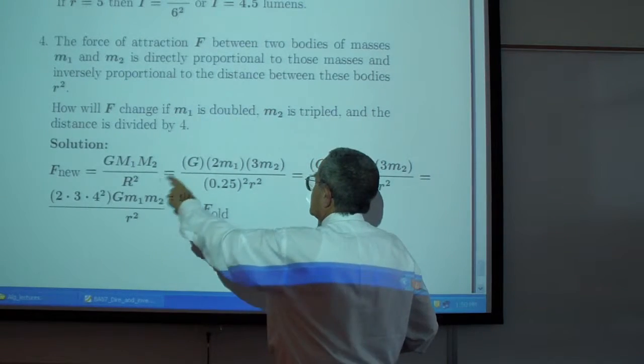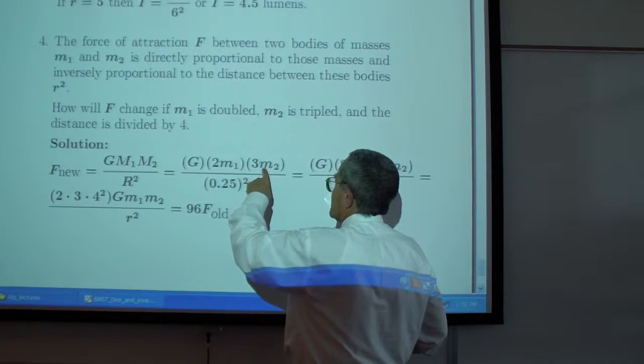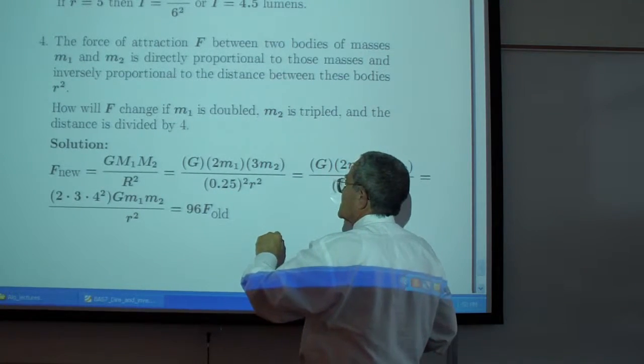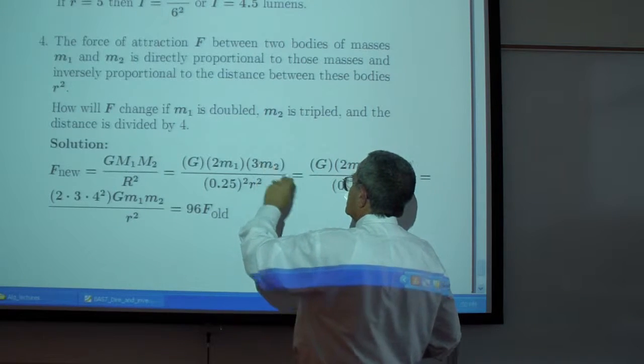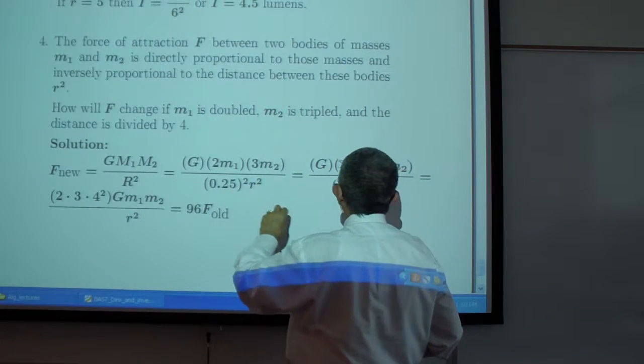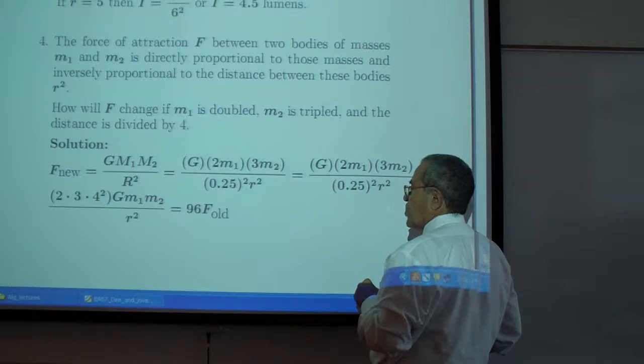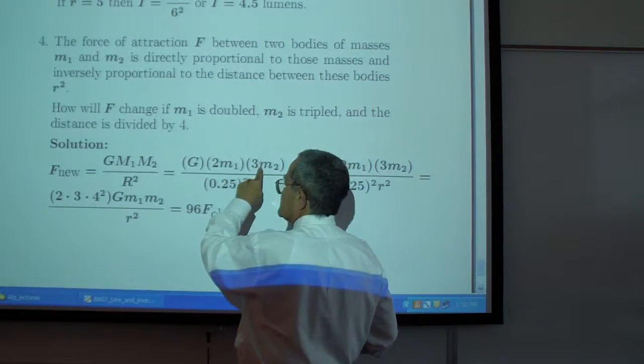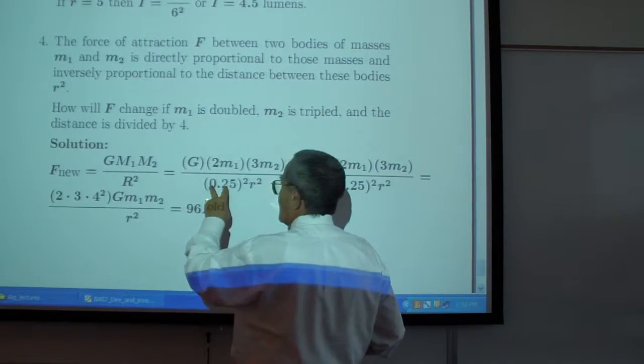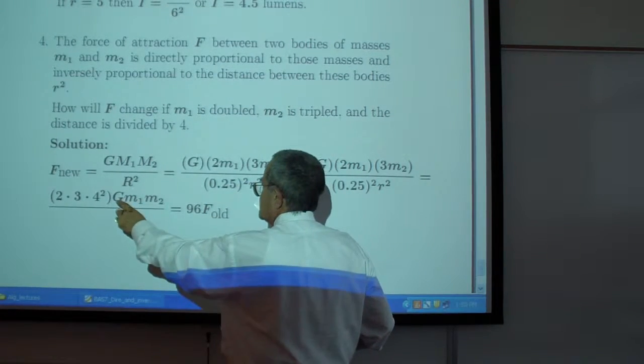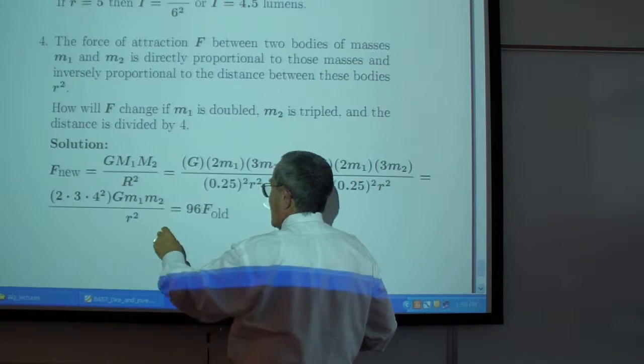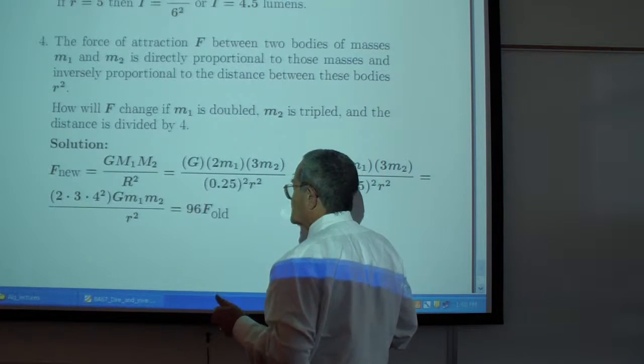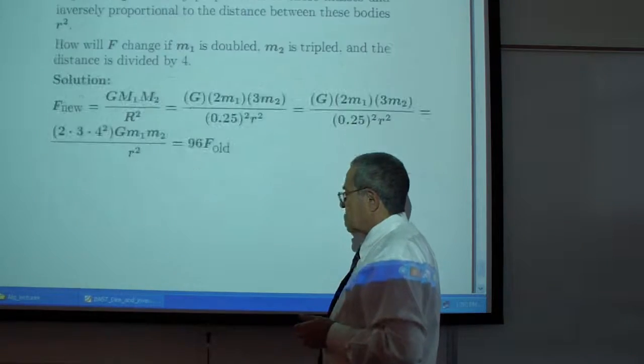If the mass M sub 1 is doubled and the mass M sub 2 is tripled, R is divided by 4. We have 2 times M sub 1, 3 times M sub 2, 0.25 square times R square. And this looks like 2 times 3 times 4 square, G M sub 1, M sub 2, R cubed. So about 96 times F. What happens to the force? It is multiplied by 96.